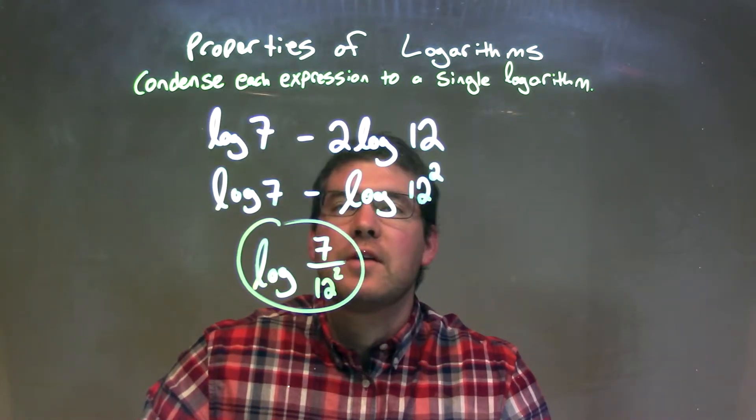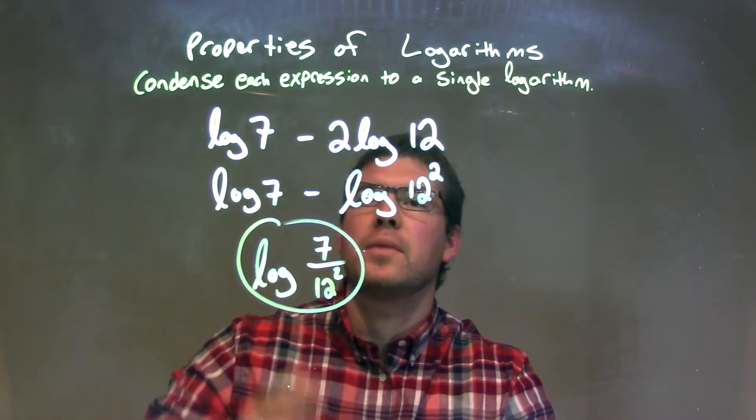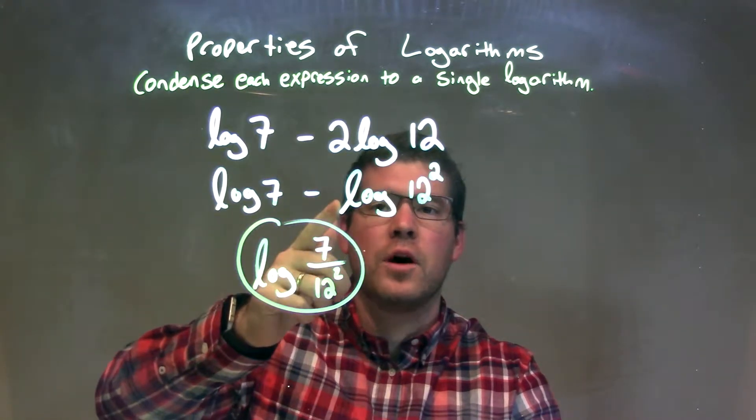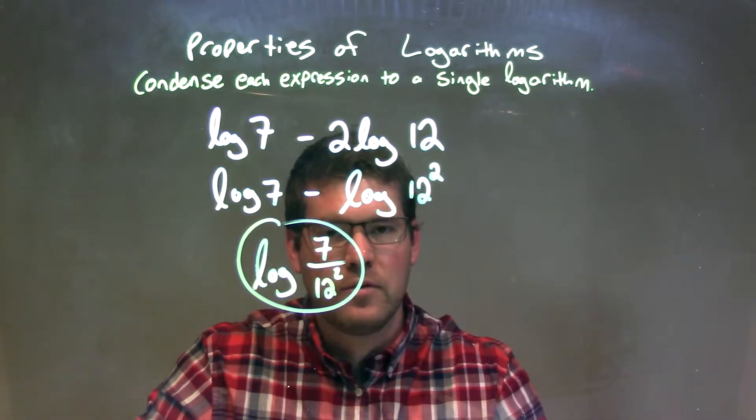Let's recap. We're given log of 7 minus 2 log of 12. From there, I took the 2 that's in front of the log of 12 and put it as the exponent of the 12, so we have 12 squared.